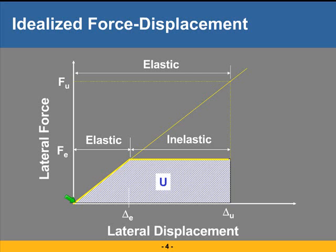So that's elastic response. Now, this elastically responding structure develops a force equal to F sub U in going through this particular earthquake, and suffers a displacement equal to delta sub U. If we are required to design this particular structure for elastic response to this particular earthquake, the logical conclusion is that we must supply the structure with a strength level at least equal to F sub U — the maximum force that the earthquake had induced in the structure — otherwise it has no way of remaining elastic.